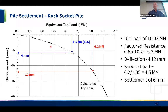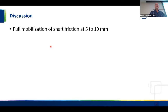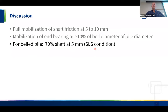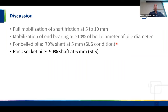Key highlights: shaft friction was mobilized with very little movement — on the order of 5 to 10 mm. Mobilization of end bearing took considerably more, typically in excess of 10% of the bell diameter. At some design conditions for the bell pile, approximately 70% of the load is carried by the shaft and 30% by the tip. For the rock socket at service limit state conditions, roughly 90% is carried by shaft friction — the shaft is doing the bulk of the work.